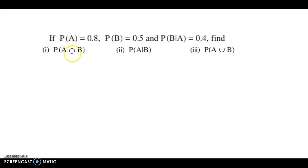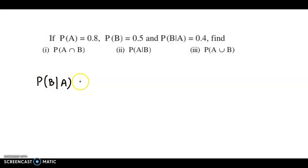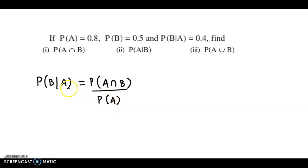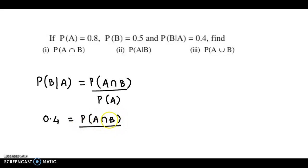First of all, we obtain probability of A intersection B with the help of probability of B given A. We know that probability of B given A is obtained as probability of A intersection B upon probability of A. Now we make the substitutions. So here the value is 0.4 equals probability of A intersection B upon probability of A, that is 0.8.